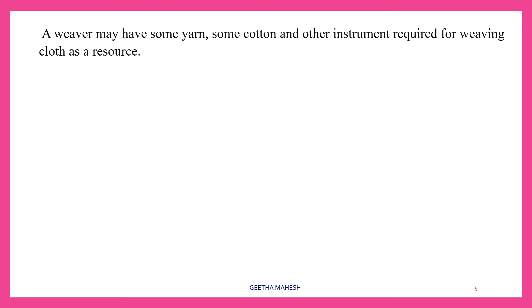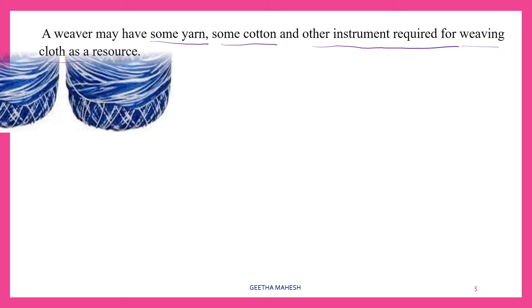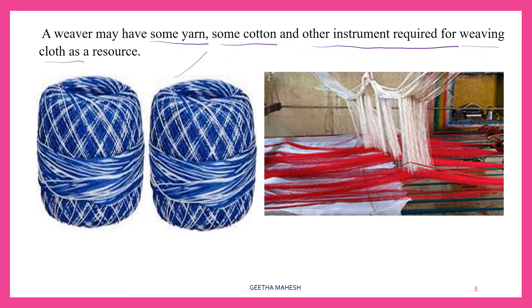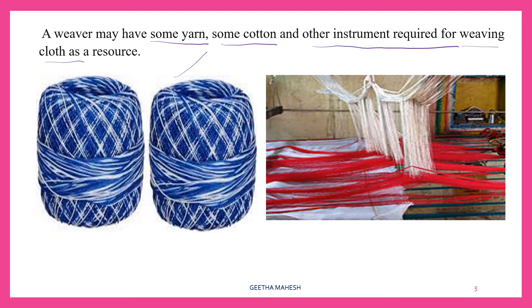Here is a pair of bulls. What is the viewer? Yarn. Thread. That is the cotton. What are the weaving instruments? This is the resource. What is the yarn? You can use cotton or cloth.